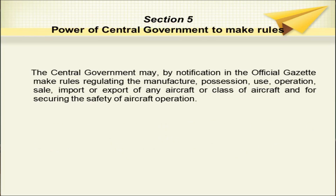Section 5 provides the power of the central government to make rules. The central government may by notification in the official gazette make rules regulating the manufacture, possession, use, operation, sale, import, or export of any aircraft or class of aircraft and for securing the safety of aircraft operation.